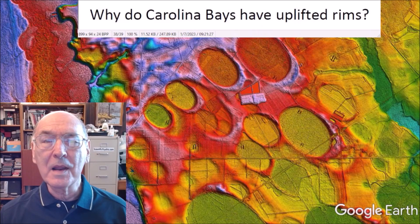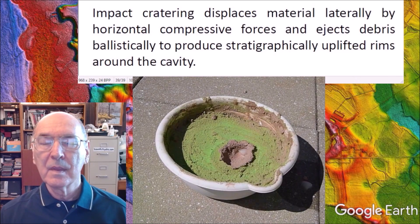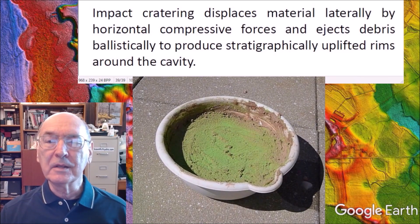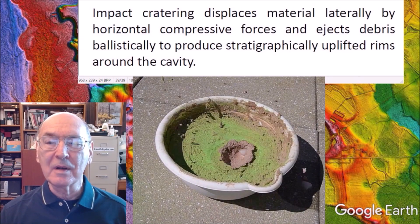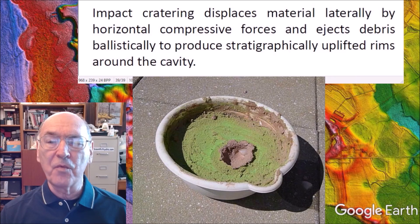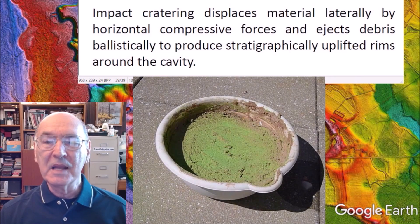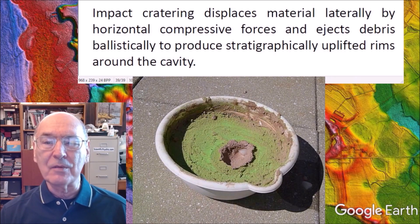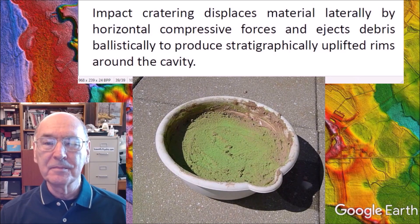Why do Carolina Bays have uplifted rims? Impact cratering displaces material laterally by horizontal compressive forces and ejects debris to produce stratigraphically uplifted rims around the cavity.